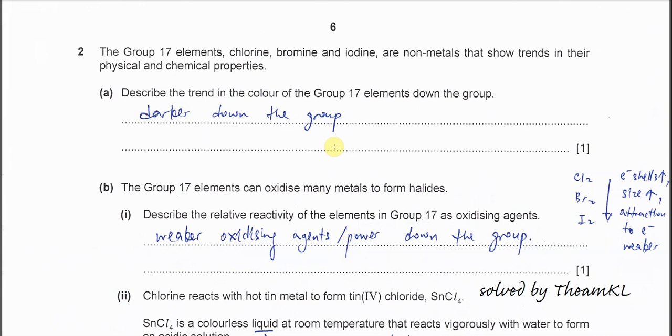Question 2. This question is about Group 17. We have chlorine, bromine, iodine, and it shows trends in the physical and chemical properties.